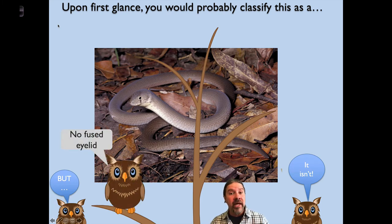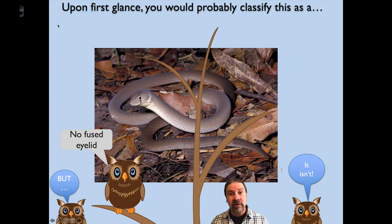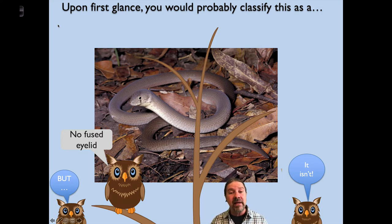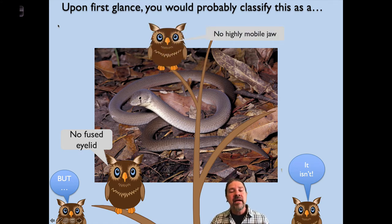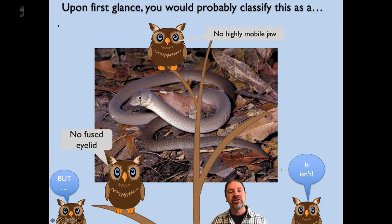The first thing we could look at, if we were able to take a close look at it, is that this animal doesn't have a fused eyelid. This animal actually blinks regularly throughout its day and will sleep with its eyes closed, whereas a snake has a fused eyelid and sleeps without being able to close its eyes — that fused eyelid makes it look like it's sleeping with its eyes wide open. Secondly, this animal does not have a highly mobile jaw. We know snakes can unhinge their jaws and take in larger prey, but this one cannot — it must eat smaller things compared to a snake.